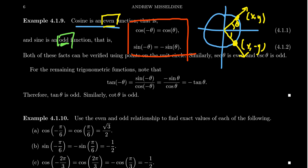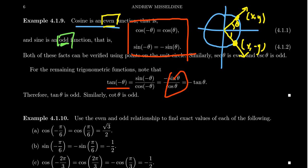Using these symmetry identities, we can determine the symmetry of the other trig functions. For tangent of negative theta: that's sine of negative theta over cosine of negative theta. Since sine is odd, the negative sign comes out front; cosine is even so cosine of negative theta is just cosine of theta. You get negative sine theta over cosine theta, which is negative tangent theta. So tangent is an odd function.